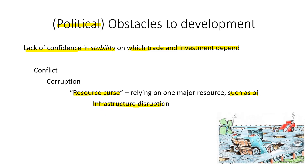Infrastructure — roads, clean water, internet, the electric grid, and education — is necessary for successful economics, and the government is centrally responsible for all of that. If the government remains unstable, that continues to be a disruption, resulting in an overall lack of government services. While relying on only one major resource is partly a function of geography, almost everything else on this list revolves around political instability.